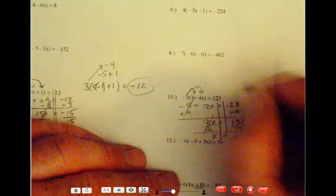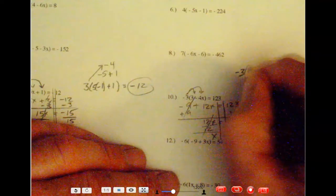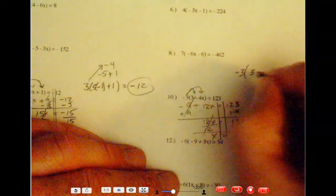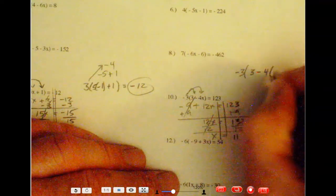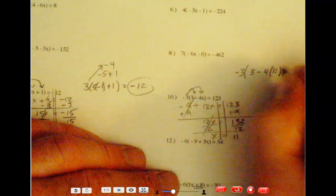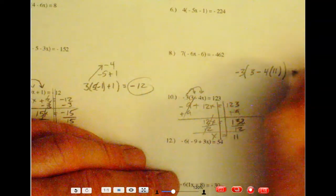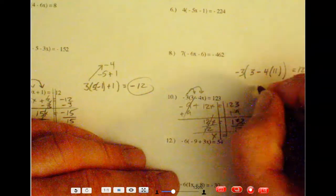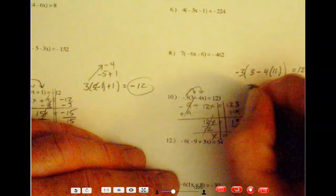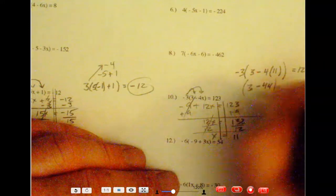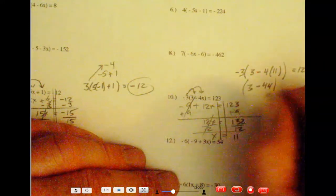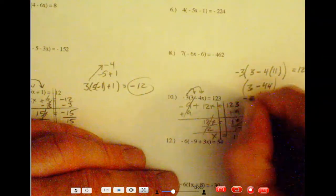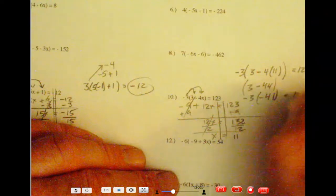Again, I'll pop it in just to make sure. Negative 3 times 3 minus 4 times 11. I'll go with 11 and 22. Well, 4 times 11, this is going to be 44. Negative 44. 3 minus 44, that's going to be minus 41. If you take that times a negative 3, you will have 123.